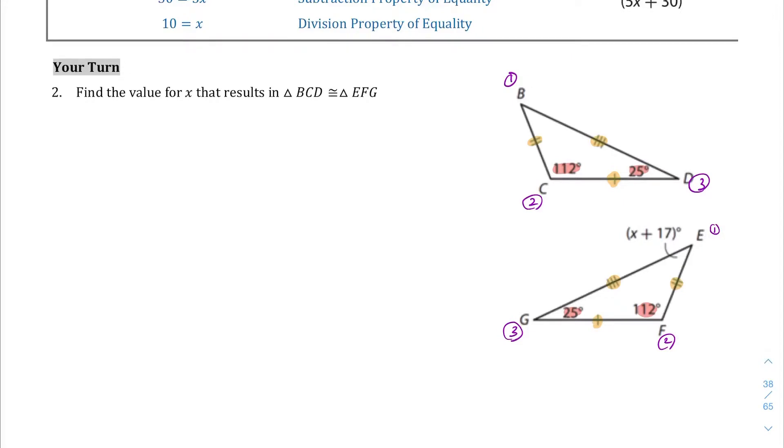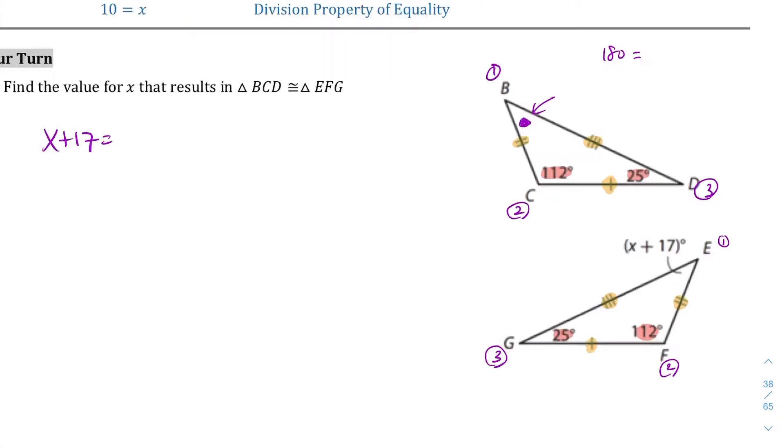Internal angles - angle G is 25, so our angle three and angle three over here are both 25. Angle two and angle two over here are both 112. And then we don't know what angle B is, but we are told that angle E is x plus 17. Let's set up our equation here: x plus 17 is equal to angle B. I know what we have to do - we have to find this, we don't know what this is. We have to use our knowledge of triangles to figure this out first.